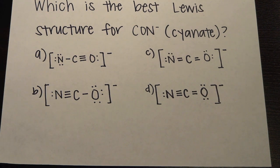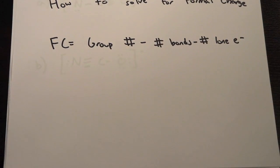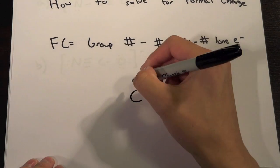So let's eliminate D but if we look back to finding out of the next three which one has the best formal charge that matches the electronegativity we have to follow these rules. And so the formal charge we find the group number minus the number of bonds minus the number of lone electrons.